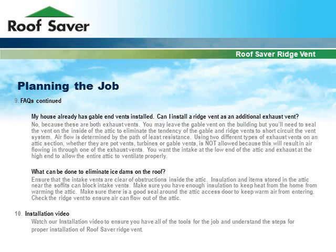If your house already has gable end vents installed, can you install a ridge vent as an additional exhaust vent? No, because these are both exhaust vents. You may leave the gable vent on the building, but you'll need to seal it on the inside of the attic to eliminate the tendency of gable and ridge vents to short circuit the vent system. Airflow is determined by the path of least resistance. Using two different types of exhaust vents — whether pot vents, turbines, or gable vents — is not allowed because air will flow in through one of the exhaust vents. You want intake at the low end of the attic and exhaust at the high end to allow the entire attic to ventilate properly.